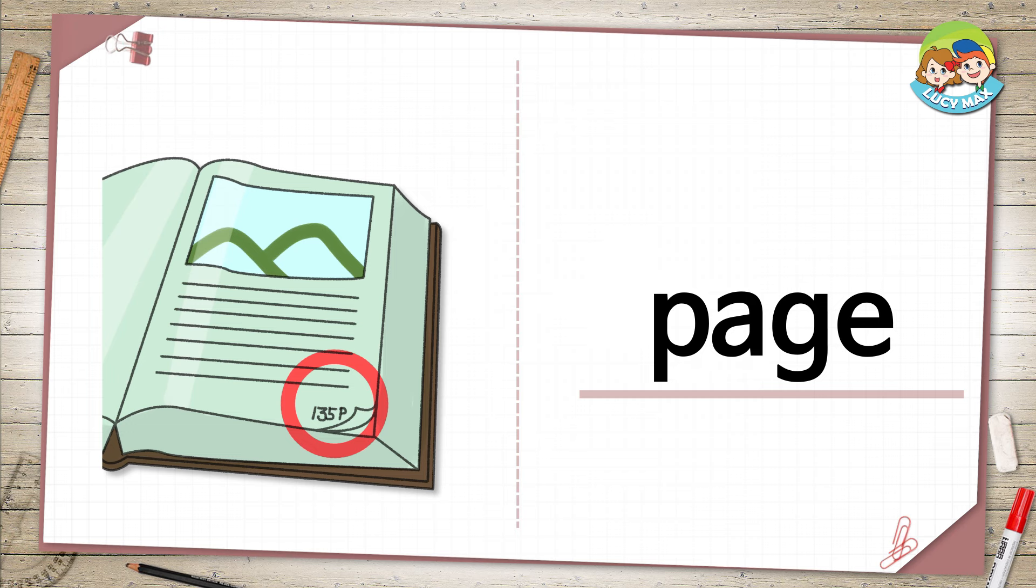Page. Look at the circle. Number 135 is marked on the paper. The number is the page number.